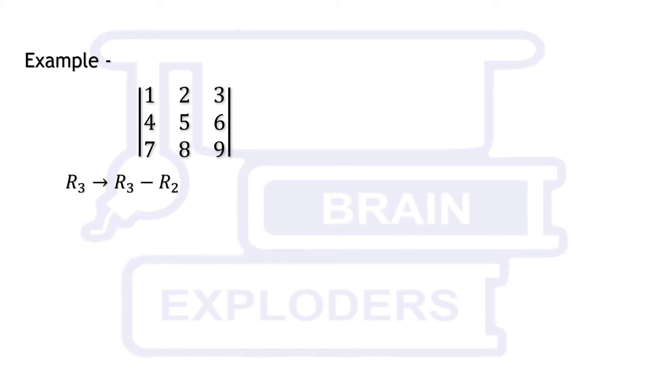Replace R3 with R3 minus R2 and R2 with R2 minus R1. Two rows become identical and therefore its value becomes 0. Hence the answer is correct.